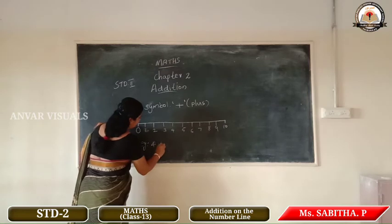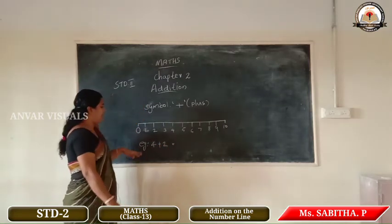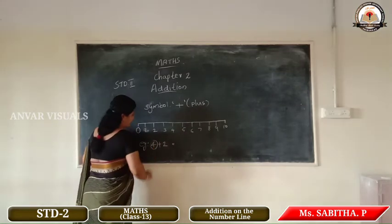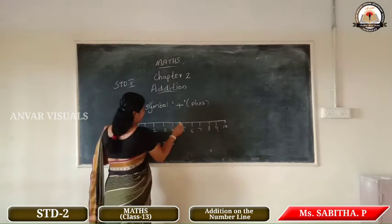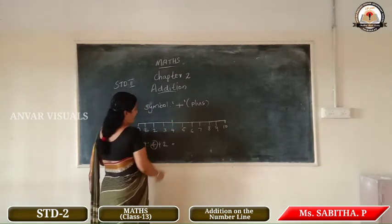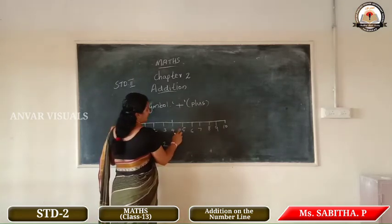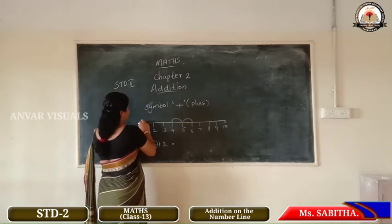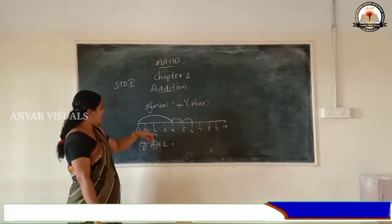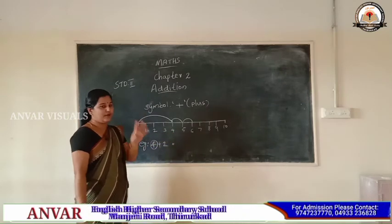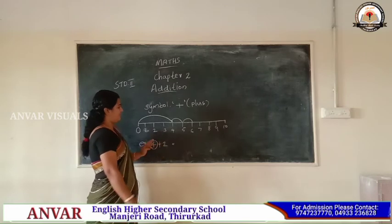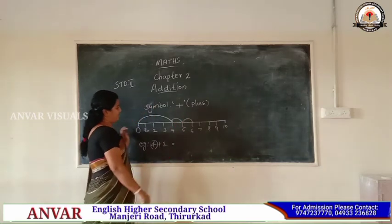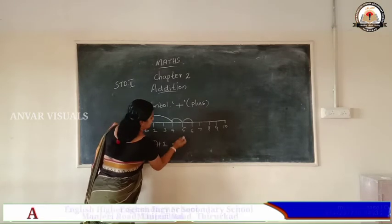Example: four plus two. The biggest number is four, so we start at four on the number line. We need to add two, so we make two jumps forward. One jump: four to five. Second jump: five to six. The answer is six. Four plus two equals six.